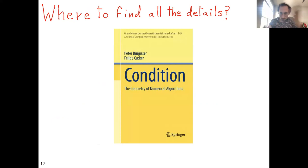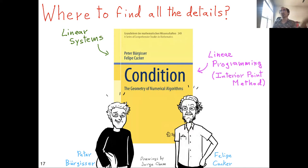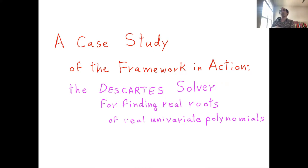A good reference covering all these topics — linear systems, linear programming, and systems of polynomial equations — is the book 'Condition' by Peter Bürgisser and Felipe Cucker. Instead of going through all the examples, I want to focus on a concrete case: the Descartes solver for finding real roots of real univariate polynomials, to illustrate the phenomenon with more technical detail.